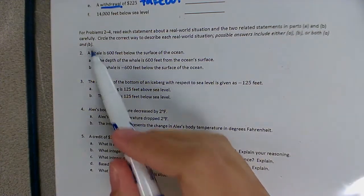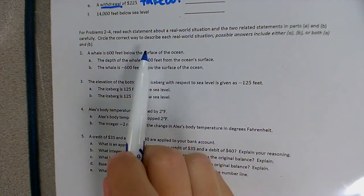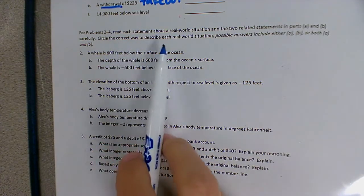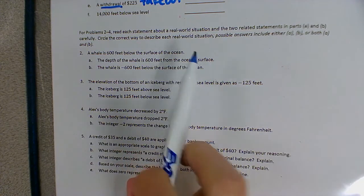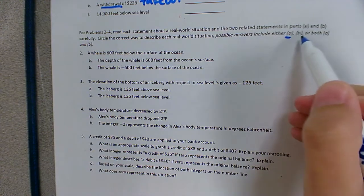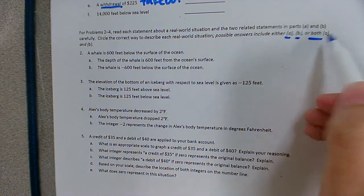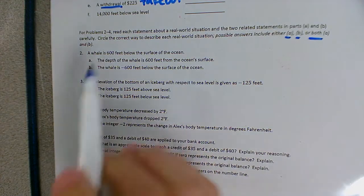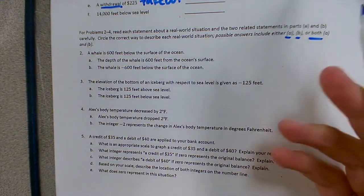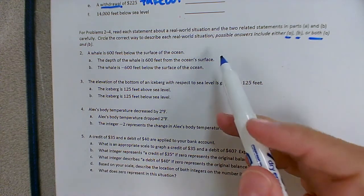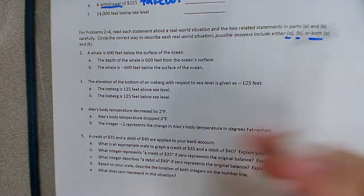For problems two, three, and four, you're going to read each statement, and then the two related statements. Circle the correct way to describe each real world situation. Keep in mind that the answer could be A, it could be B, or it could be both A and B. So read each statement and determine which statement is read correctly or is written correctly. And it might be one, it might be the other, it might be both.